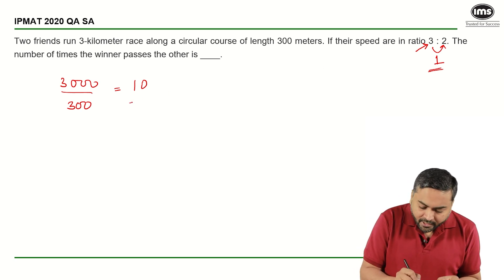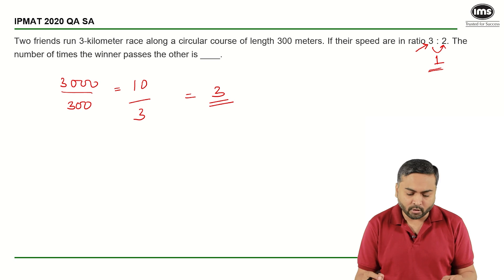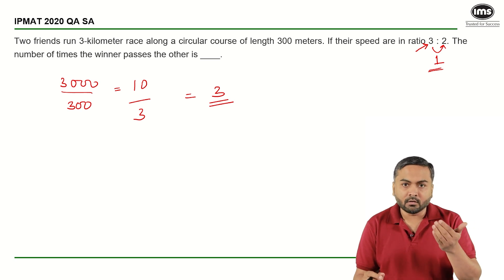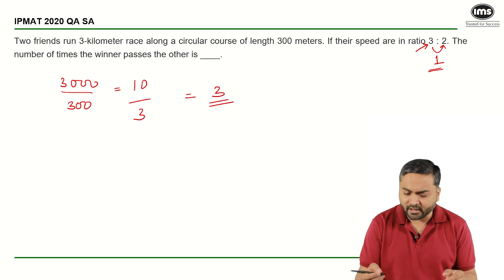So basically what I can do is 10 divided by 3 and I can say that they will meet each other 3 times. The winner will meet the loser or the one who comes second 3 times, and we can also verify that.